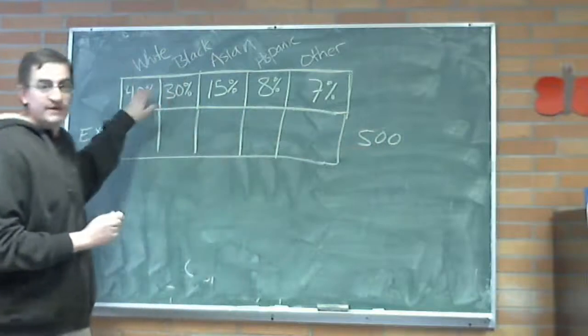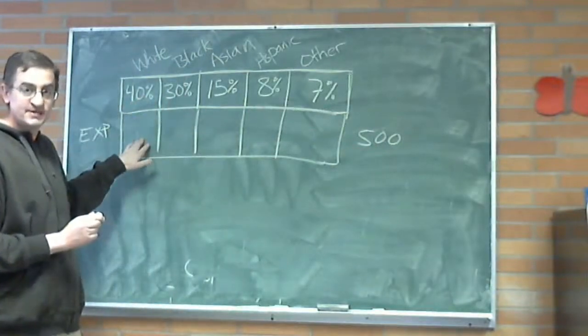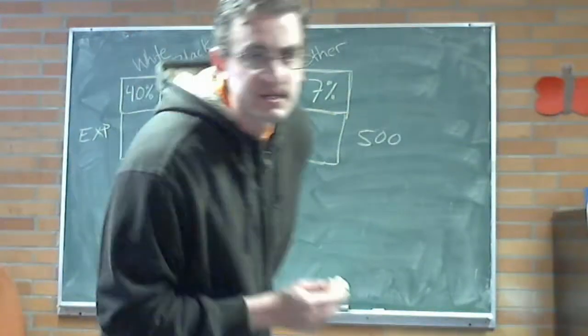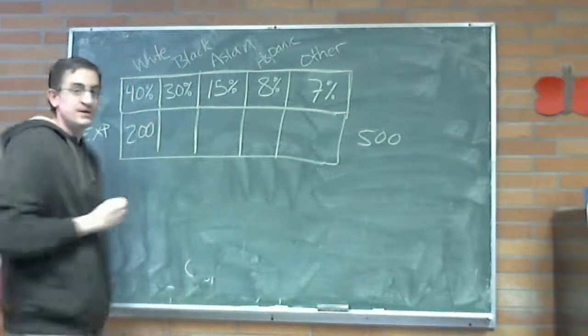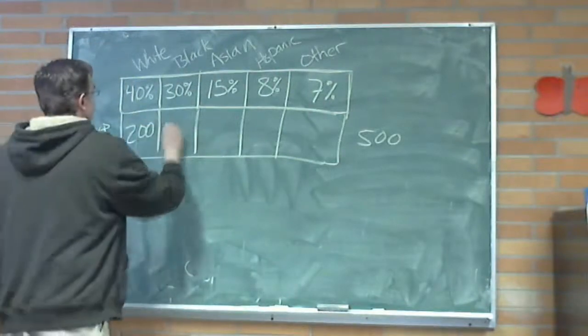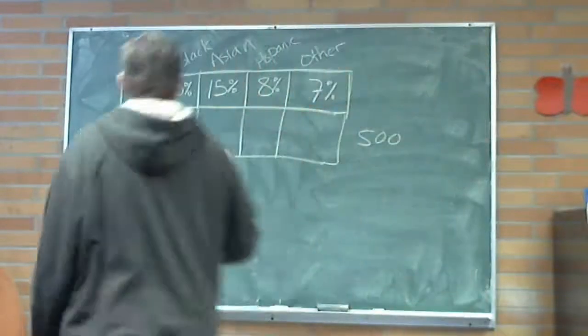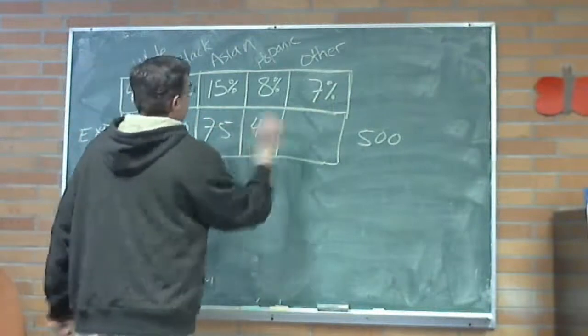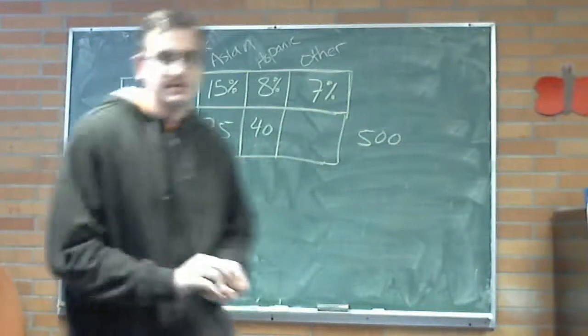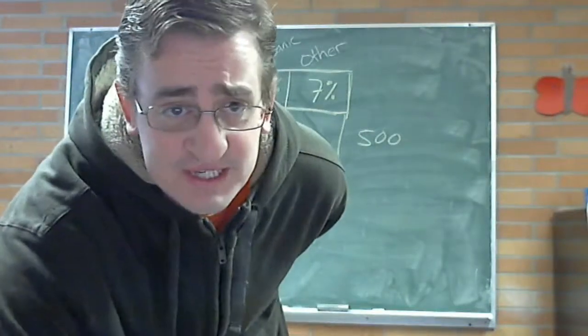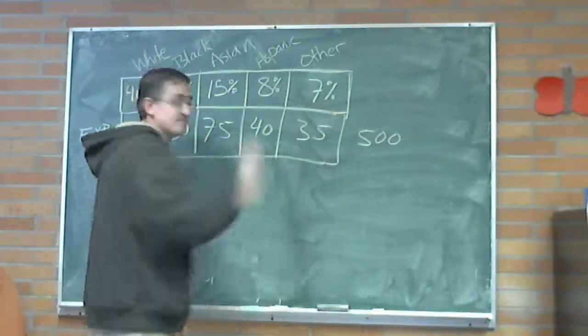If 500 people come through the airport and 40% of them are white, how many whites am I expecting to see in the airport? And the answer is going to be, where did I calculate it already? 200. So, there are 200 white people, 150 that are black. Let me check my numbers: 75 and 40. And this is 7% of 500, which is going to be whatever the leftover is, which says 35.